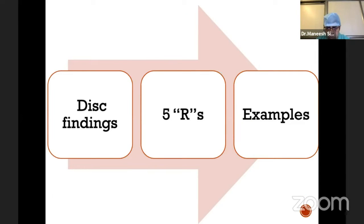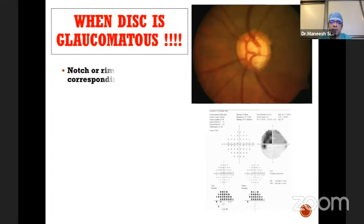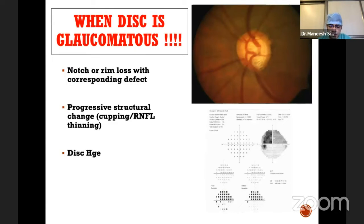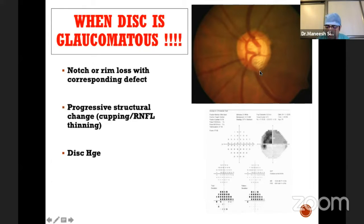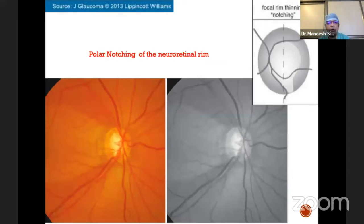In my presentation of 14-15 minutes, I'll be talking about the key disc findings which are important for glaucoma. I'll also discuss the Five R's, introduced by Professor Vainrep, and share some examples to understand how disc evaluation is done. The most important thing is disc and field correlation for glaucoma diagnosis. Whenever you see a disc, you need to check for any thinning of the neuronal rim, and locate and document any inferopolar thinning.